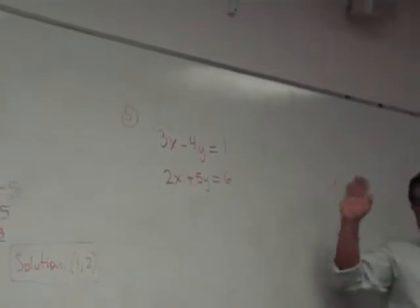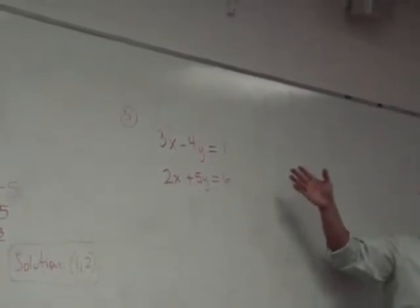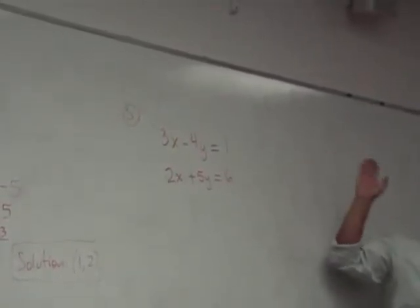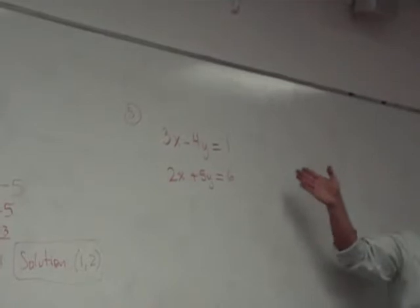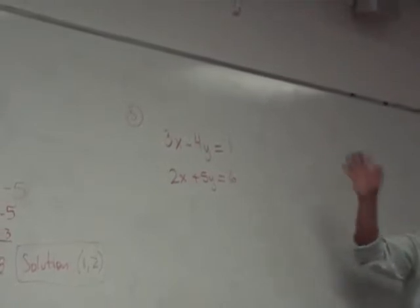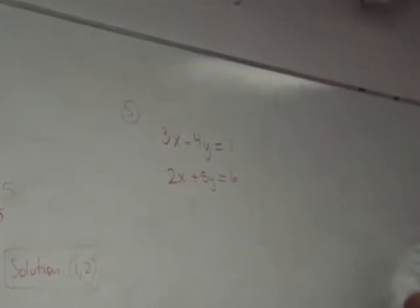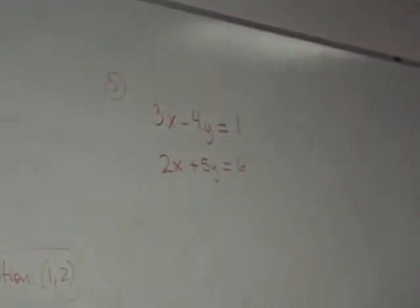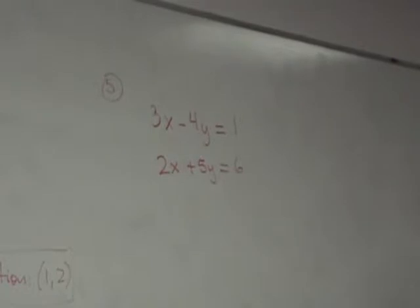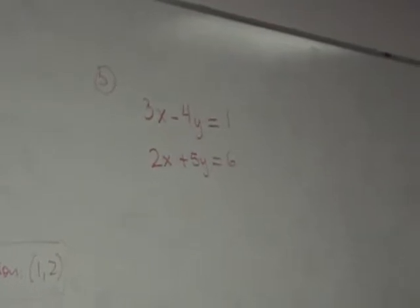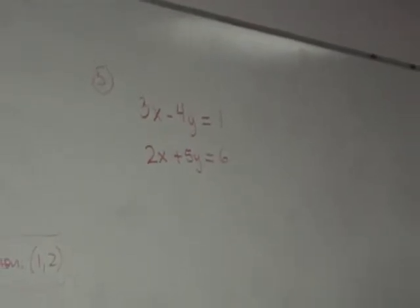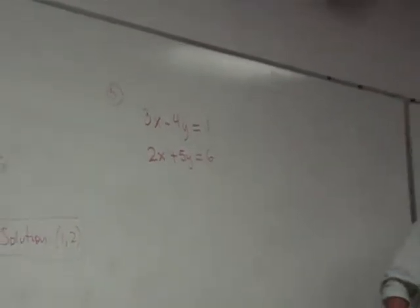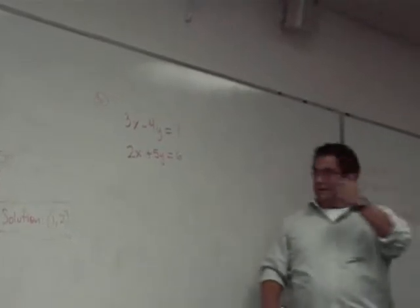This is as hard as they come. When it comes to the addition method, this is the hardest type of problem. What you're going to think about is common multiples—or imagine, if you were thinking of fractions, how you find common denominators. That type of idea.